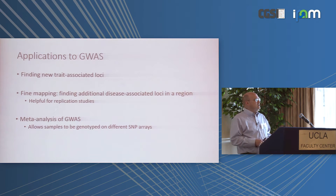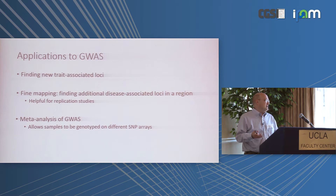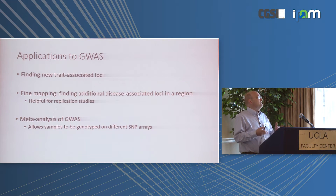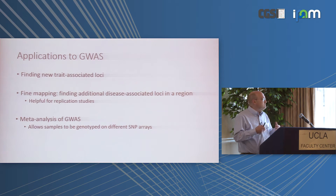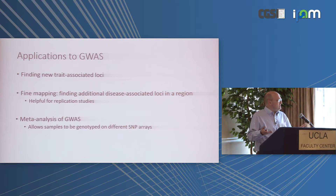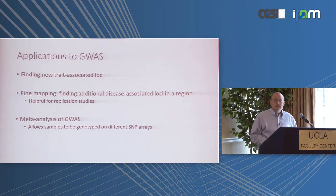The idea is that you have a SNP array on which you've genotyped 300,000, 500,000, or a million markers. But there are many other markers in the genome. If you can impute them, you can test additional markers, which should give you a little bit of an increase in power.